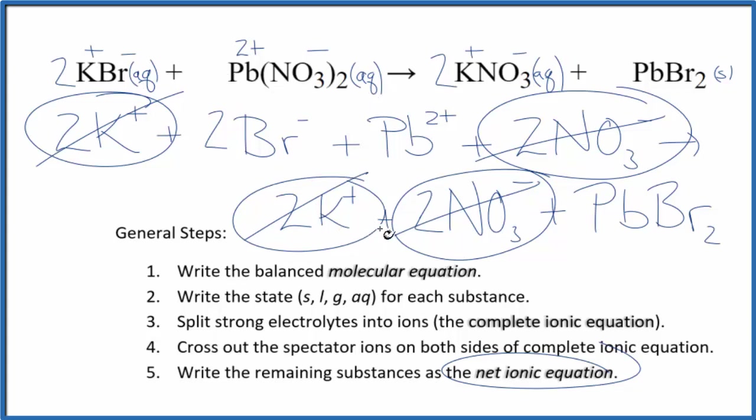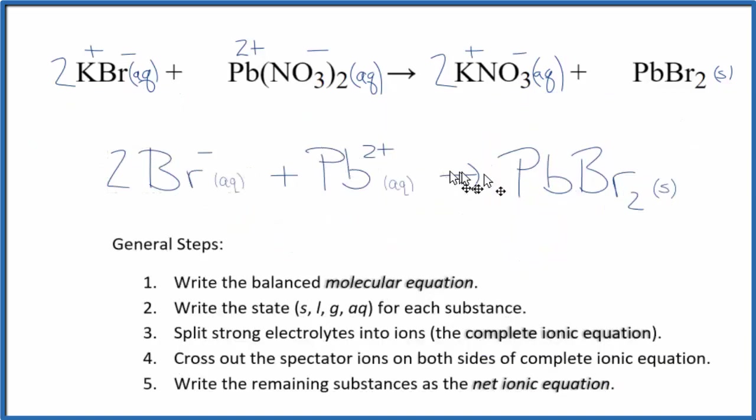I'll clean it up and write the states. We'll have our net ionic equation. So this is the balanced net ionic equation for potassium bromide and lead 2 nitrate.